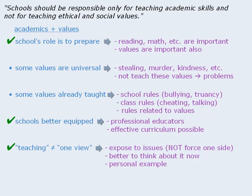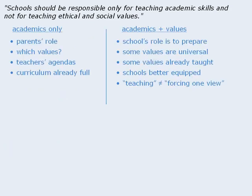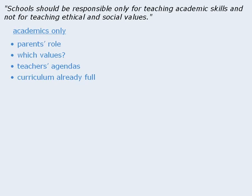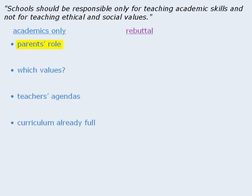Alright, now that we have identified points that support our position, we also want to discuss points for the other side. When we do this, we are demonstrating that we have considered both sides of the issue. Now in our essay, we don't just want to mention these points for the other side — we want to mention them and then rebut them. So for example, what kind of rebuttal can we make regarding the point that teaching values is the role of parents?